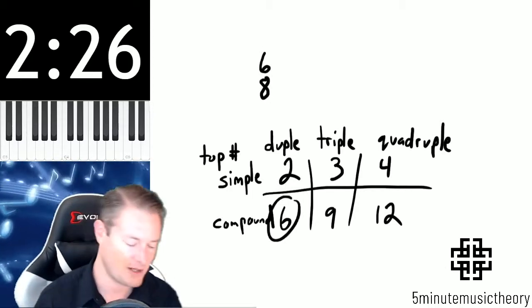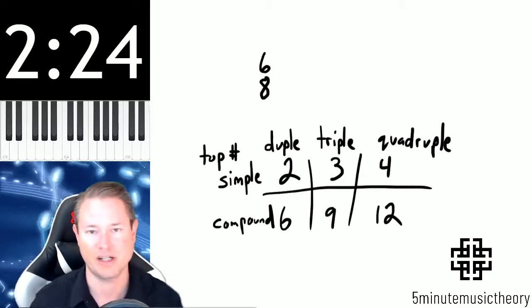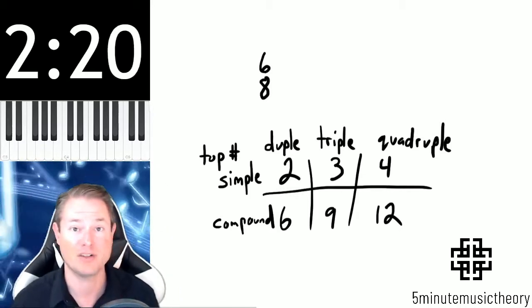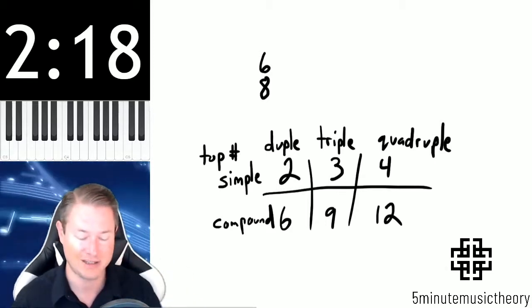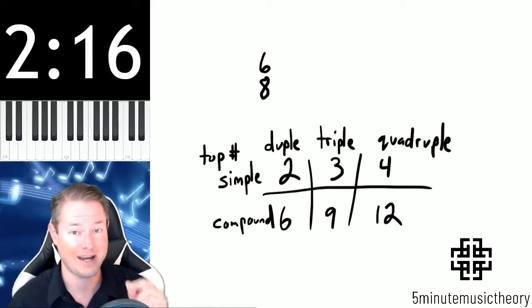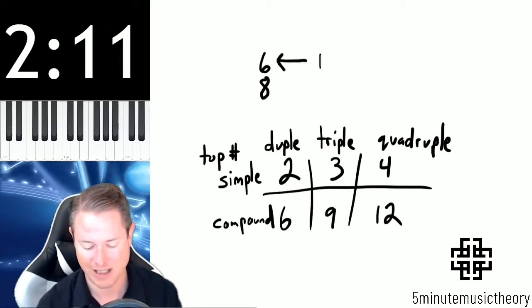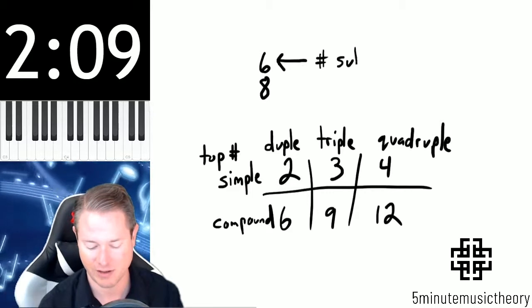So 6 is the top number of the time signature here. So we know that this is a compound meter. And it's a compound duple, which means that there's 2 beats. So notice that the 6 doesn't indicate how many beats there are. What the 6 indicates in a compound meter is how many subdivisions there are.